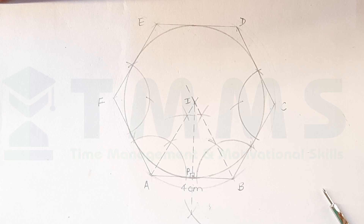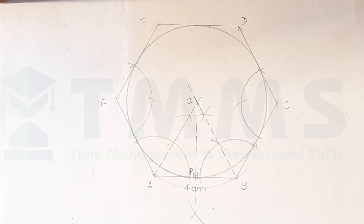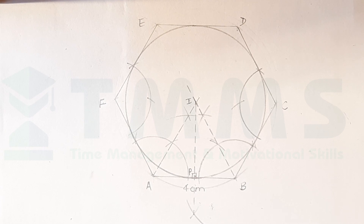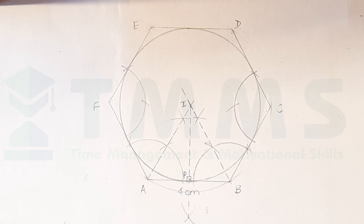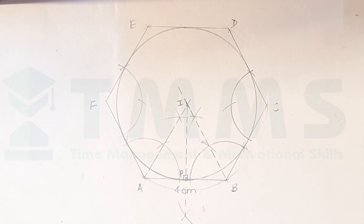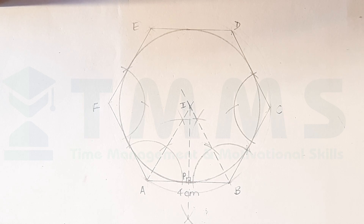That's the way we draw the circumcircle and the incircle. Once again: circumcircle — bisect sides; incircle — bisect angles. Did you find the constructions easy? Let me know if you found this video helpful. Thank you for watching.